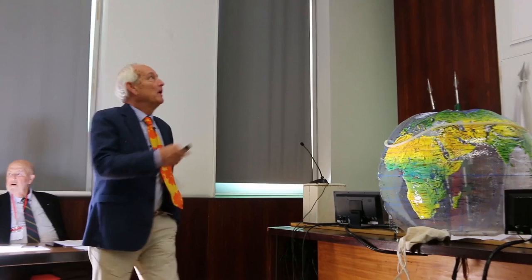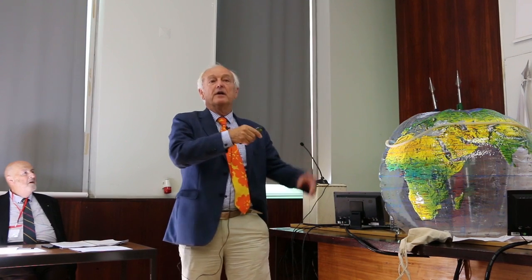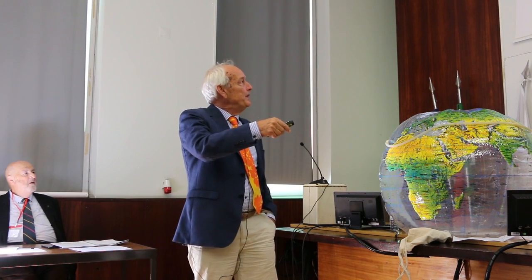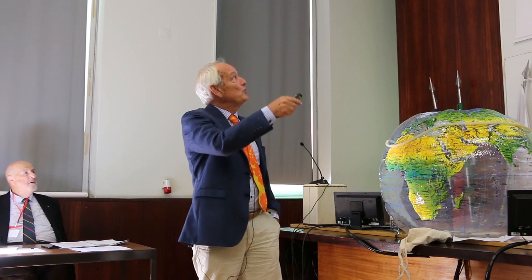Before starting, I want to clarify what we are talking about because not all of us know the subject very well. Variation in solar activity relates to irradiance and the solar wind. We have cosmic rays falling in, shielded by the solar wind, which controls the infall of cosmic rays. That affects beryllium-10, C14, and cloud formation. So when Easterbrook talks about this system, and the Earth's rotation, that is what we talk about in climate change instead of CO2.